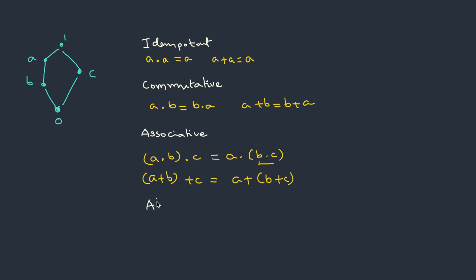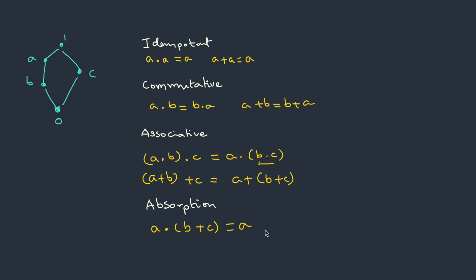Now comes absorption. Consider A meet (B join C). Starting with the brackets: B join C — the join of B and C is 1. Then A meet 1: for A and 1, the meet is A. So this simplifies to A. These are the four properties followed by any lattice.